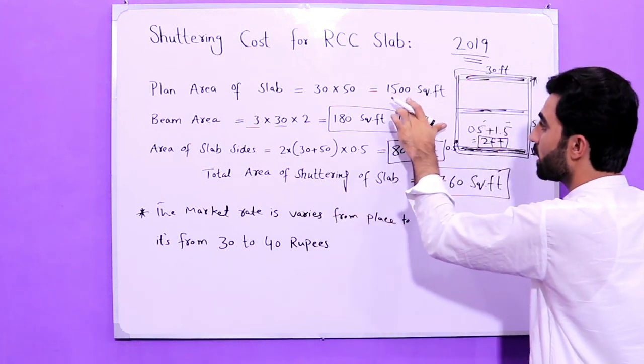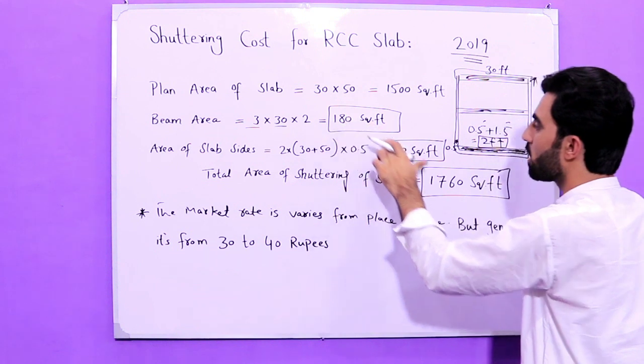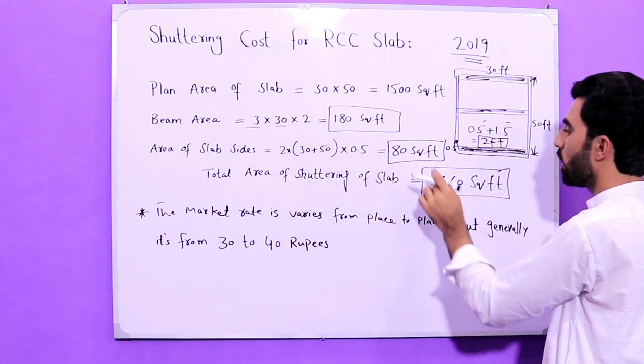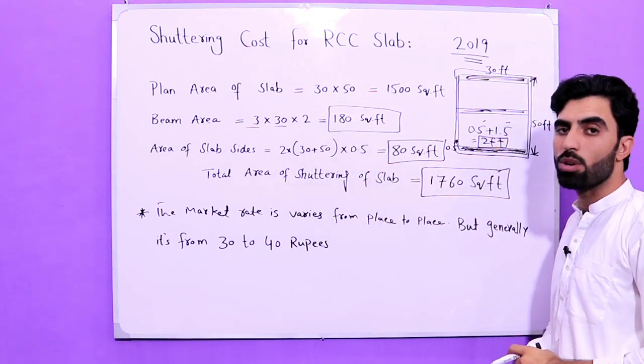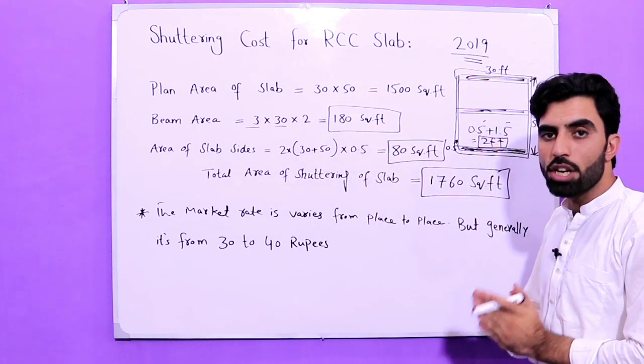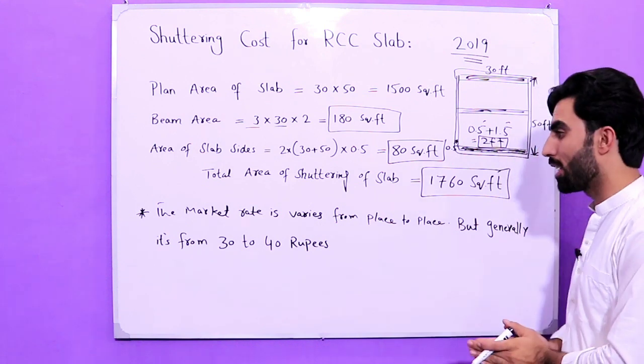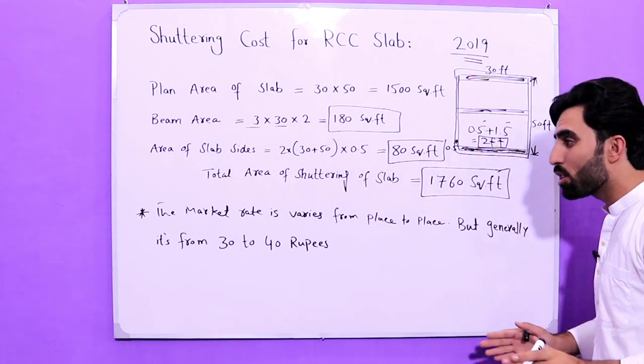Now we find the total area of shuttering for the RCC slab: 1,500 plus 180 plus 80 gives us 1,760 square feet — that is the total area of shuttering for the RCC slab.